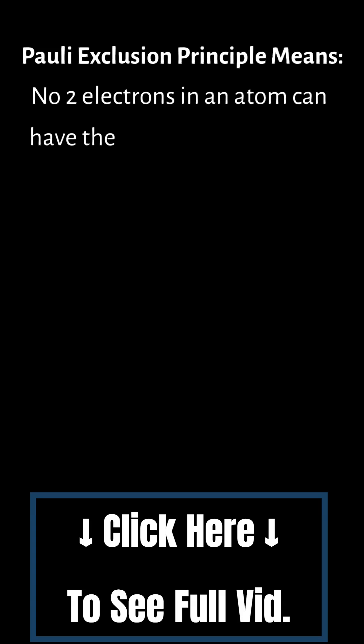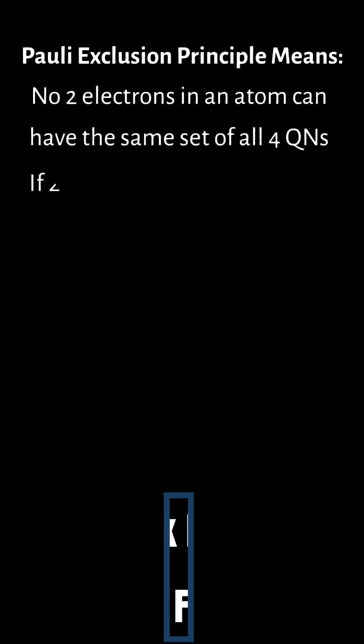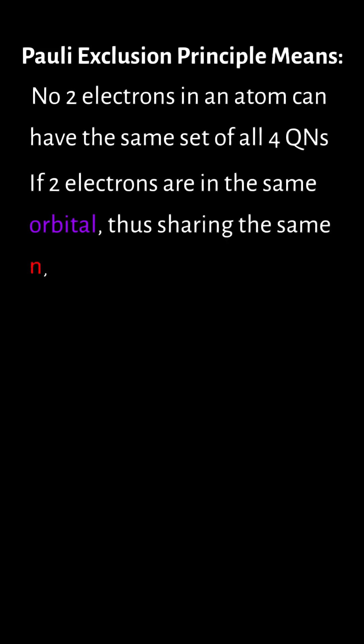This means that no two electrons in an atom can have the same set of all four quantum numbers. If two electrons are in the same orbital, thus sharing the same n, l, and m_l, they must have opposite spins m_s to satisfy the principle.